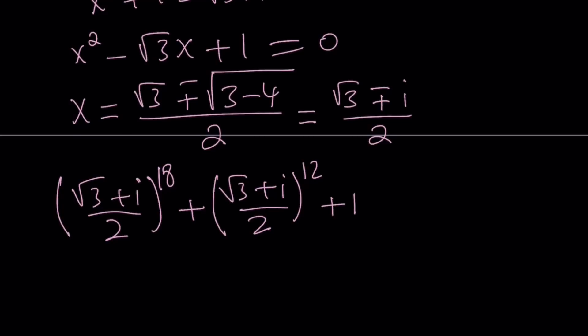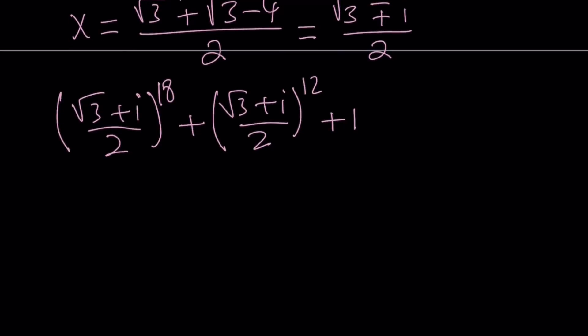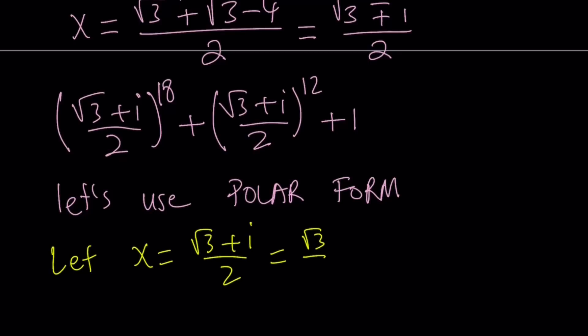So, let's do something else. And that's called the polar form. Because these are complex numbers. So, let's use polar form. What is polar form? The polar form is basically writing a complex number using trigonometry. So, I can just separate these first. Square root of 3 over 2 plus 1 half i.